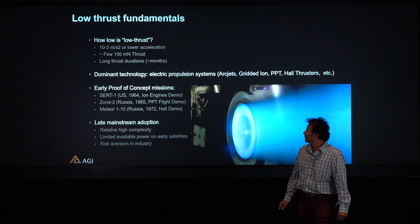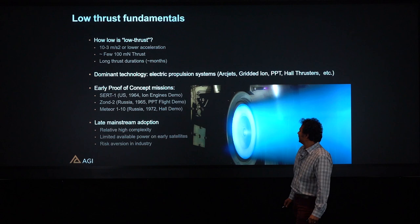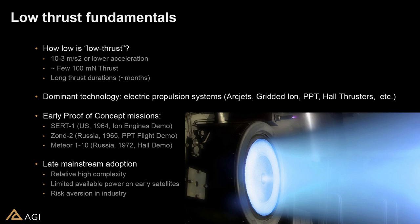To differentiate Low-Thrust from High-Thrust: High-Thrust is of the order of g's or more, like multiple g's, maybe 10 g's, and they are typically thought of as impulsive thrust systems. The dominant technology in the Low-Thrust world is electric propulsion systems. They started with Arc-Jet systems back in the 60s, but more recent advances have given rise to systems like Hall-Thrusters, which are becoming more and more common.